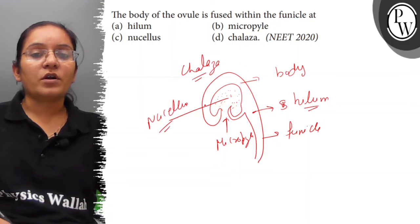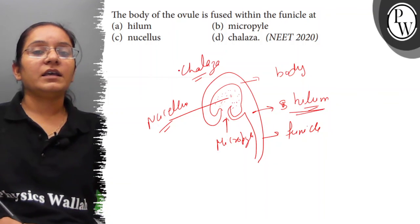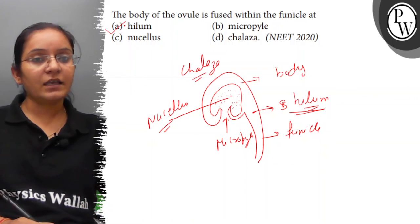Body of ovule is fused with funicle at a scar called Hilum. So the correct answer here is option A. Thank you.